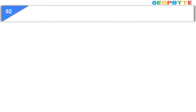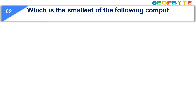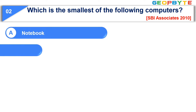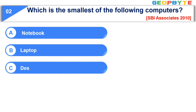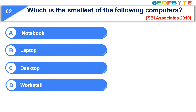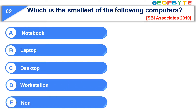Moving to question number two. Which is the smallest of the following computers? Option A: Notebook. Option B: Laptop. Option C: Desktop. Option D: Workstation. Option E: None of these. The correct answer is option A, Notebook.